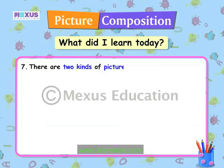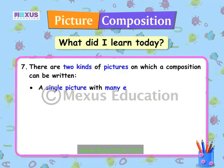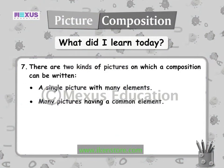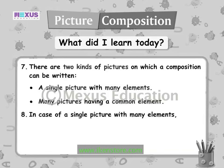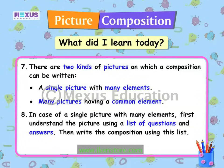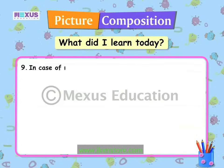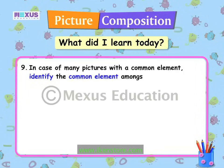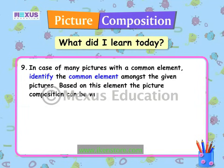There are two kinds of pictures on which a composition can be written: a single picture with many elements, or many pictures having a common element. In case of a single picture with many elements, first understand the picture using a list of questions and answers, then write the composition using this list. In case of many pictures with a common element, identify the common element amongst the given pictures — and based on this element, the picture composition can be written. Remember to write the composition in past tense only.